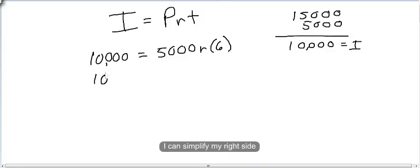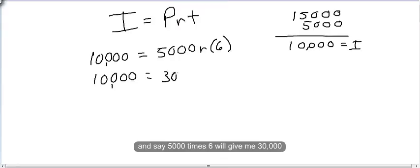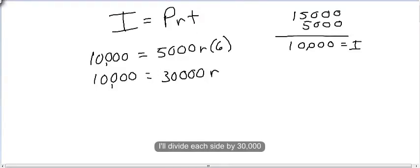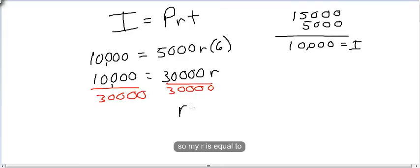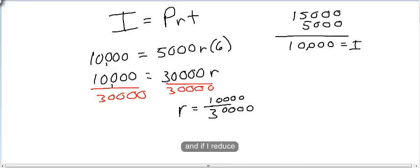I can simplify the right side: $5,000 times six gives me $30,000. So now I have $30,000 times R. Solving for R, I'll divide each side by $30,000. So R is equal to $10,000 over $30,000, and if I reduce, I'm left with 1/3.